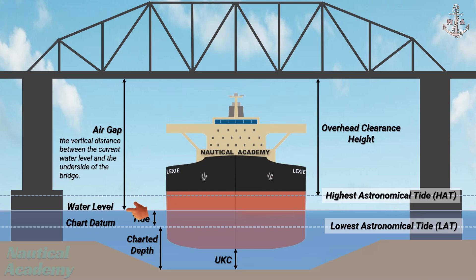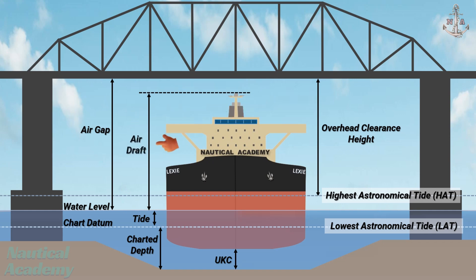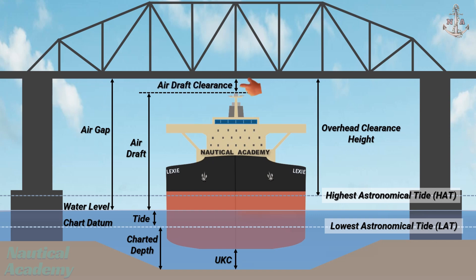The vertical distance from the waterline up to the highest point of the ship — like the radar mast or funnel — is called air draft. For a vessel to pass safely underneath the bridge, the ship's air draft must be less than the available air gap. The space that remains between the ship's highest point and the underside of the bridge is called air draft clearance — this is our vertical overhead safety margin.